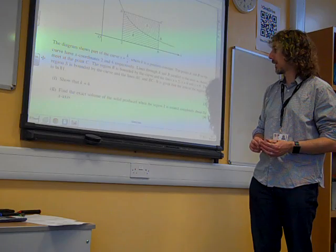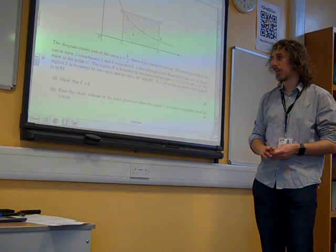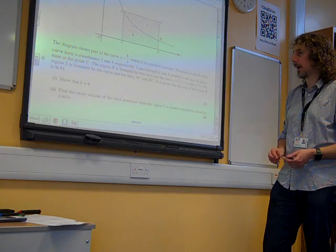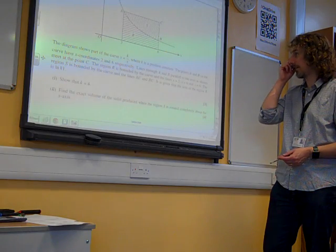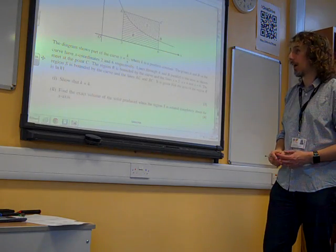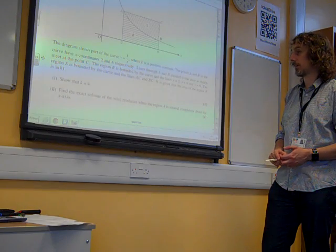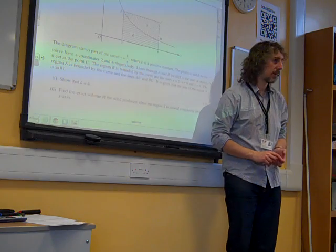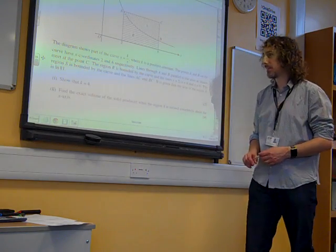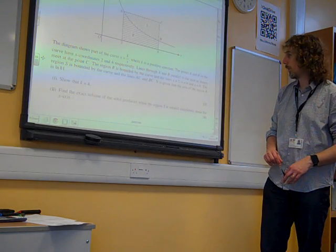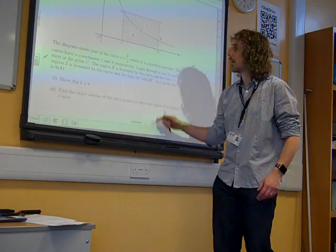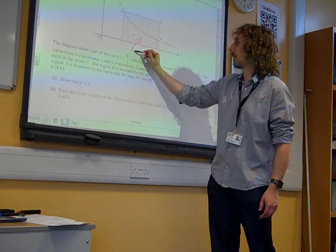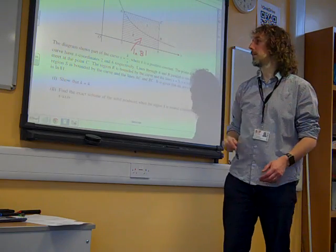The region r is bounded by the curve, and the lines x, y... It's one of those ones where you just get tired of reading everything. The region s is bounded by the curve and the lines ac and bc. It's given that the area of the region r is ln81. Show that k equals 4. So many letters, so much going on. What have we actually been told? The region r is of area ln81. So we've been told that.